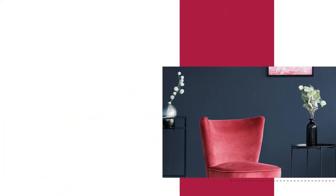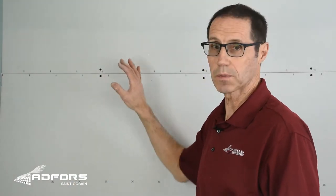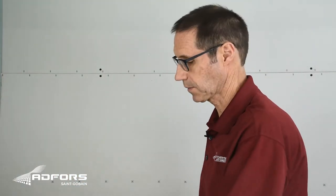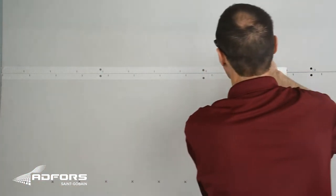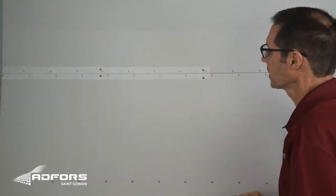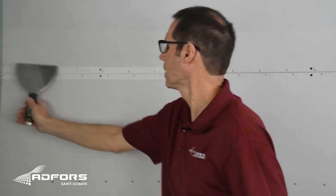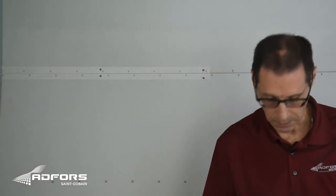Now let me show you how easy it is to install. Mesh tape is very easy to work with. It's applied over the seam before any compound is. Simply center it over the seam, press it in place with your taping knife, and then apply a thin layer of joint compound.